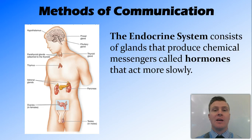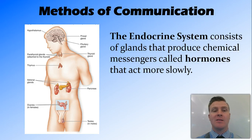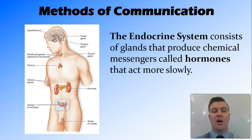Some of the organs in the endocrine system include the brain and different parts of the brain, such as the pituitary gland and hypothalamus, as well as the adrenal glands, pancreas, thyroid, thymus, and the sex organs — the ovaries or testes, depending on your sex.